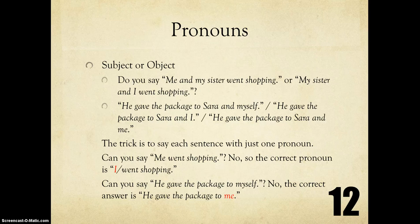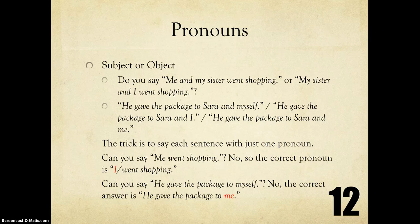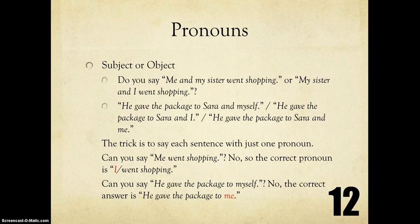Pronouns — there are some common errors. One of the most difficult problems is when to use a subject or an object pronoun. For example, do you say me and my sister went shopping, or my sister and I went shopping? The trick is to say each sentence with just one pronoun. Can you say me went shopping? No — so the correct pronoun is I. Can you say he gave the package to myself? No — so the correct answer is he gave the package to me.